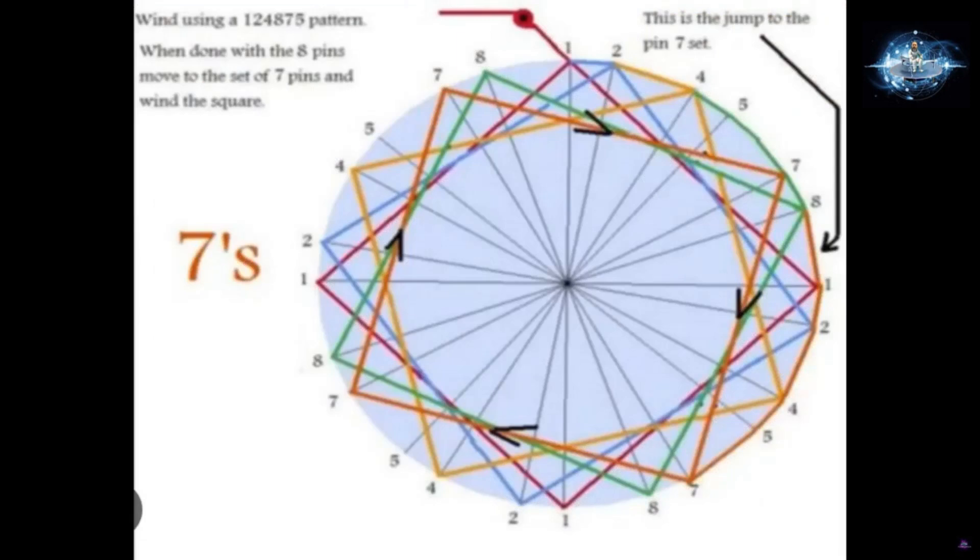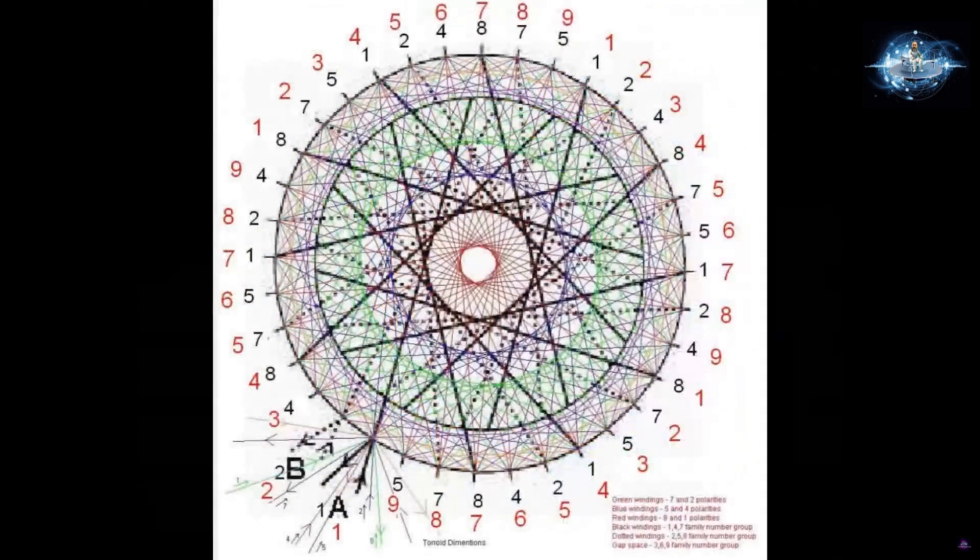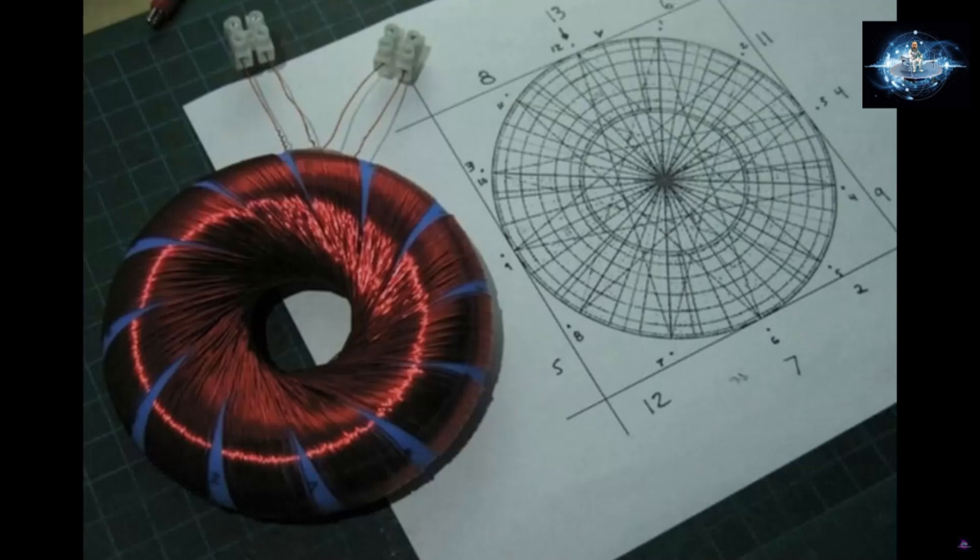So we start with simple shapes that we know that we can put into a toroidal fashion. Then we start to make them more complex. Each time that we make a shape, we put it into a wire form. Then we test it and check the flow pattern. We see which ones match and which ones don't.